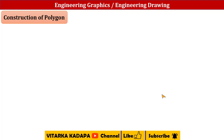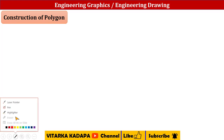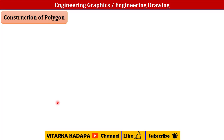A polygon is a closed structure bounded with straight edges. The minimum number of sides to form a polygon is three, which we call a triangle. Four sides gives us a square or rectangle, five sides is a pentagon, and so on.